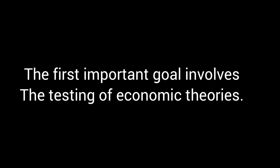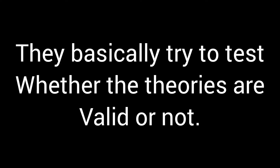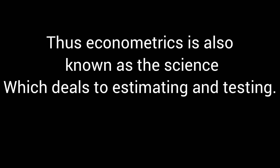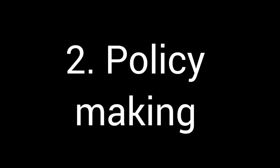The first important objective of econometrics is analysis — that is, to test economic theory. Econometrics basically aims at the verification of economic theories, whether the theories are valid or not. The purpose of such research is obtaining empirical evidence to test the explanatory power of economic theories, and how properly the theory will explain the observed behavior of economic units. Thus, econometrics is also known as the science which deals with estimation and testing.